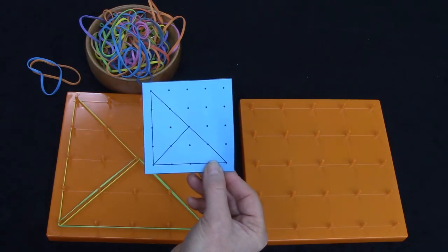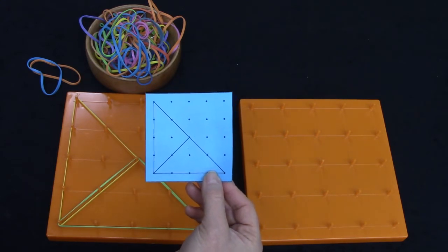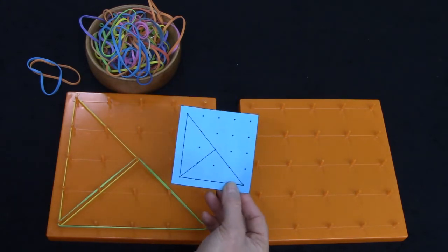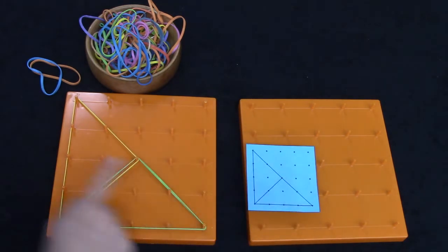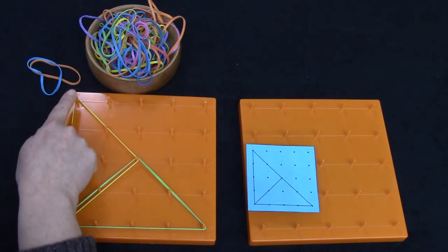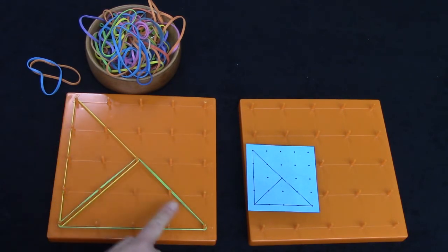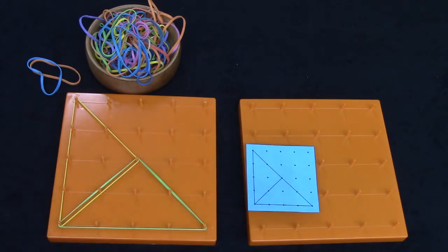What do we call shapes that are the same shape but not the same size? We call them similar. They're similar shapes. Well there's two triangles here. One, two, but maybe if you squint you can see one really big triangle. So there's one two and then another big one so it's like there are three triangles.